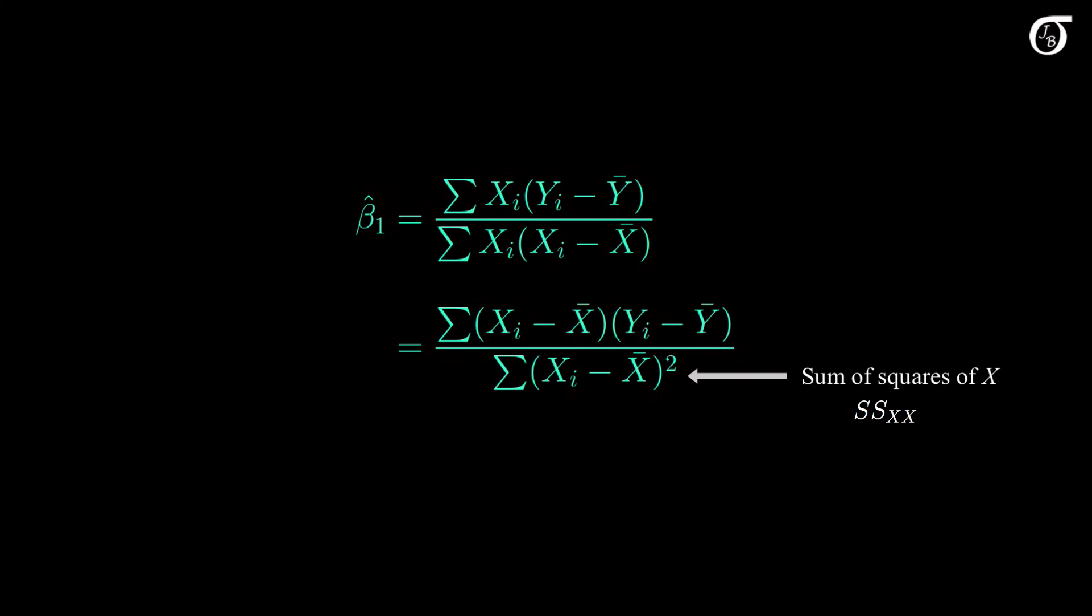The numerator is the sum of the products of the x and y deviations. This is the numerator of the formula when we calculate the sample covariance of x and y. It is often referred to as the corrected sum of products, and you may see it represented with SPXY, or SXY, or possibly SSXY.